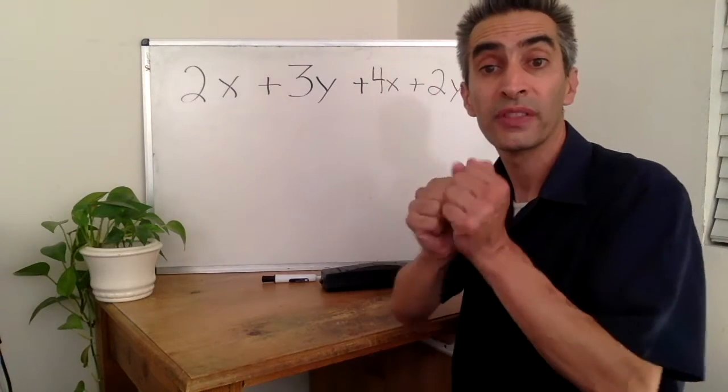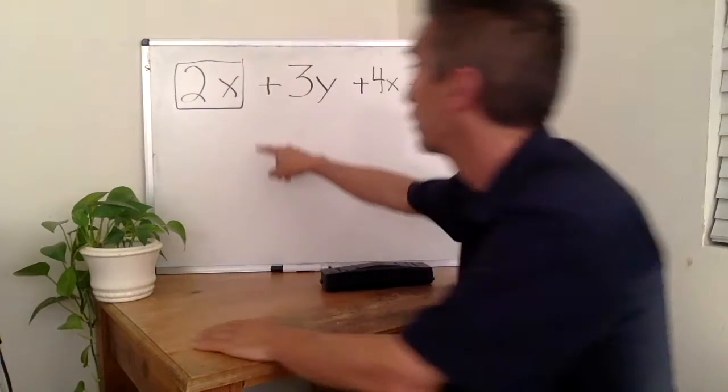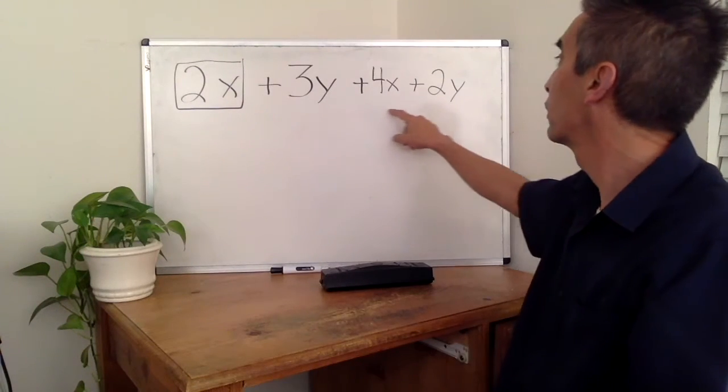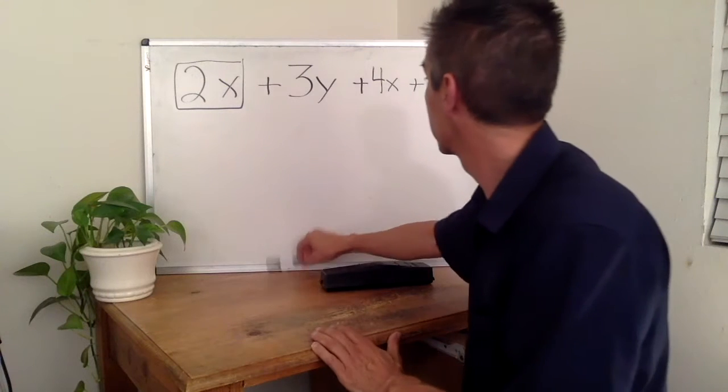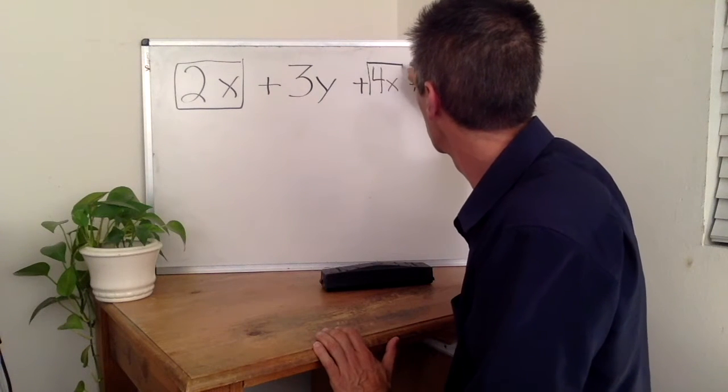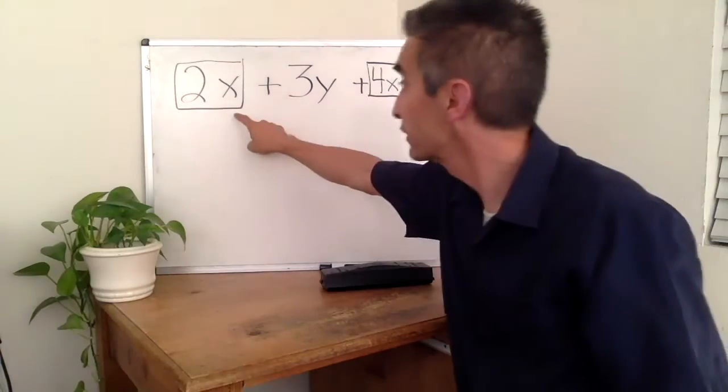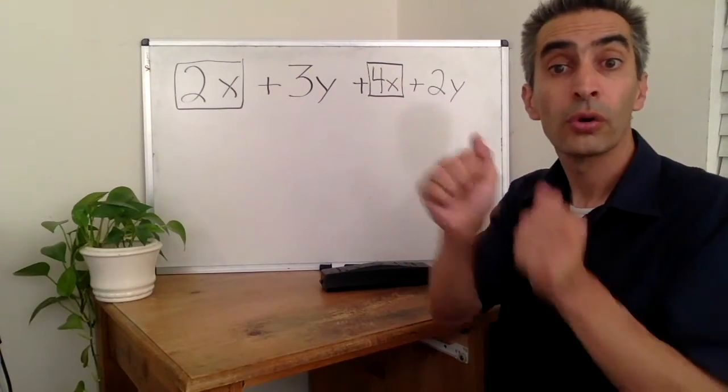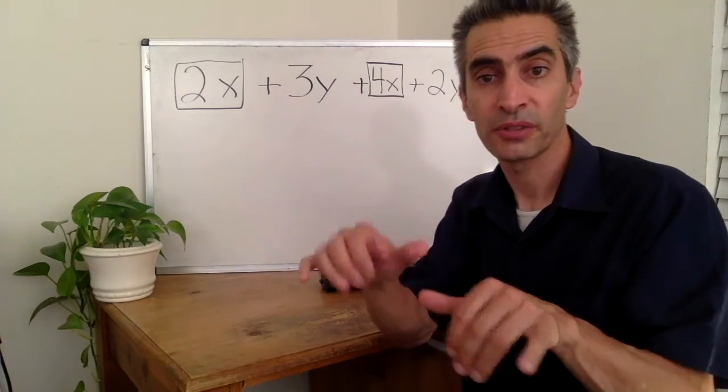Notice, the 2 is with the x. And the 4 is with the x. The 2 is with the x. The 4 is with the x. They're common terms.